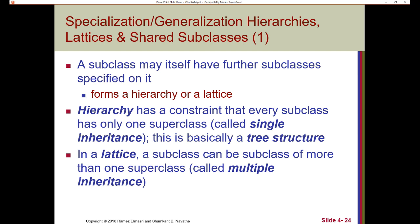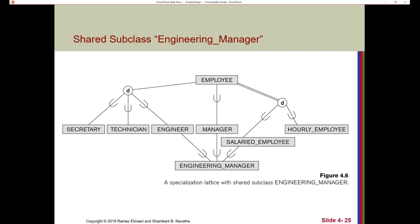If we have a case where a subclass has further subclasses specified on it, we get what's referred to as either a hierarchy or a lattice. In a hierarchy, every subclass has only one superclass — this is referred to as single inheritance, and it has a tree structure. If you have a lattice, a specific subclass could belong to more than one superclass — this is multiple inheritance. That subclass would inherit all of the attributes from as many superclasses that it belonged to. Here's an example of a shared subclass with multiple inheritance, called a lattice.